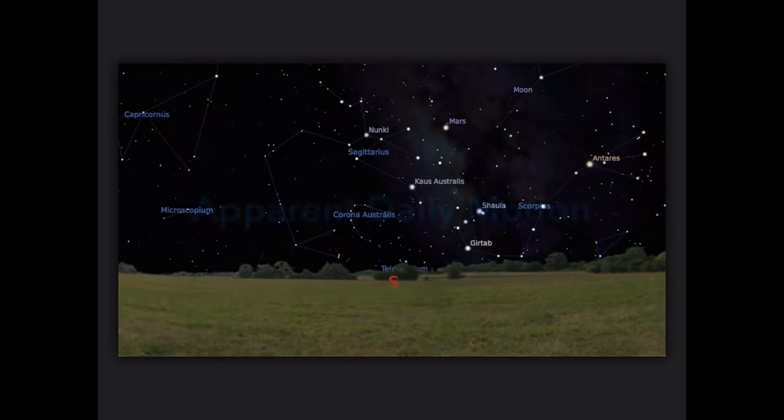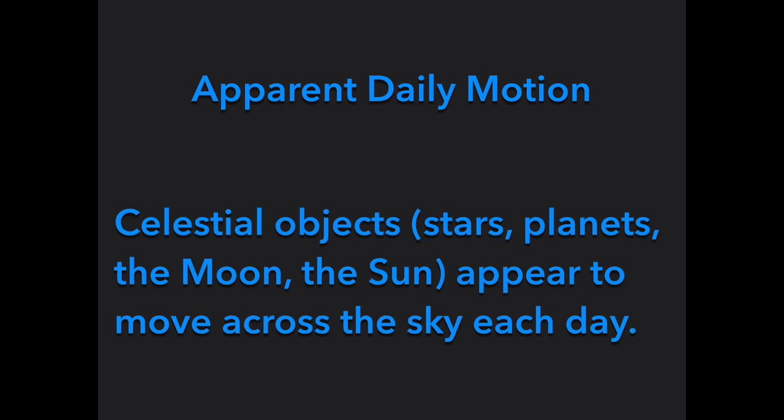As we discussed, this is called apparent daily motion. Apparent daily motion states that celestial objects—our stars, our planets, the moon, and the sun—appear to move across the sky each day at a rate of 15 degrees per hour.